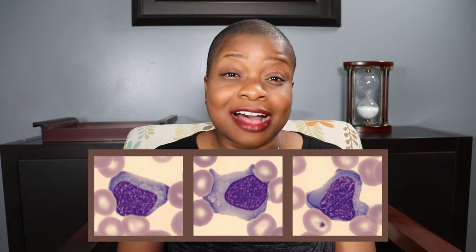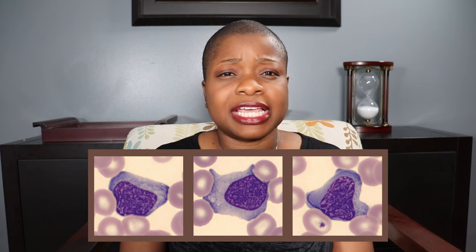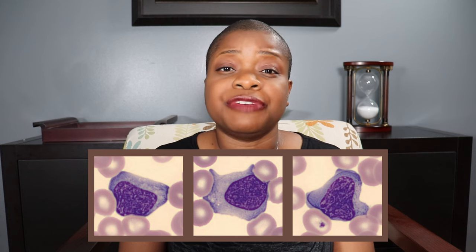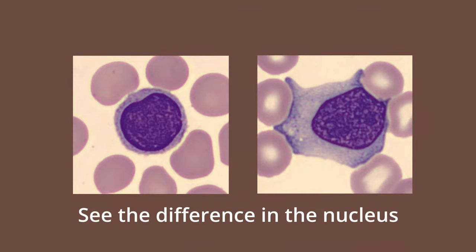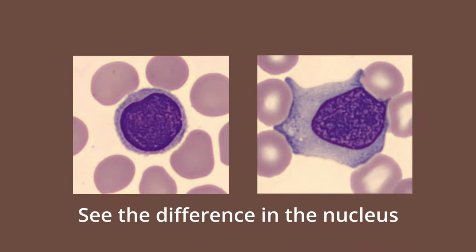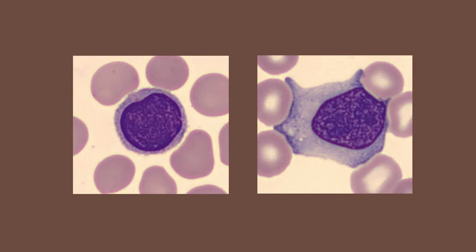The nucleus, and in reality the cell as a whole, have a pleomorphic or varied appearance. One reactive lymph does not look like its other friends on the slide, but the nucleus will have a mature appearance though not as condensed as the small resting lymphocyte. There may be a nucleolus but it will be small.